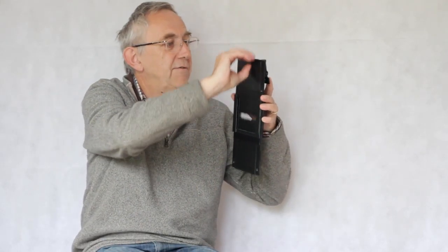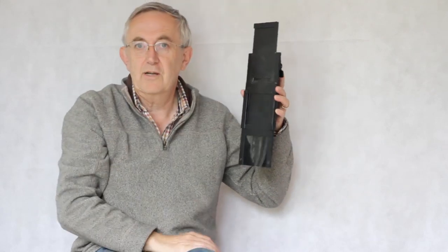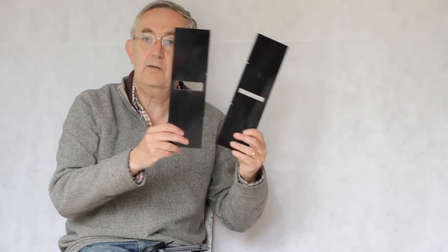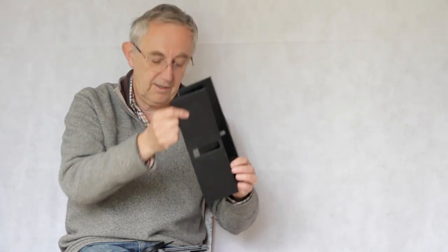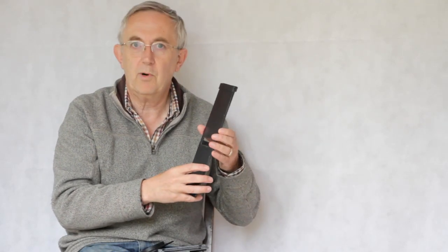So creating different speeds is as simple as having different size holes in the blades that drop through the shutter. Really straightforward, and that's okay if you want shutter speeds that are a fraction of a second. We'll see in a moment that longer shutter speeds become a bit more problematic.